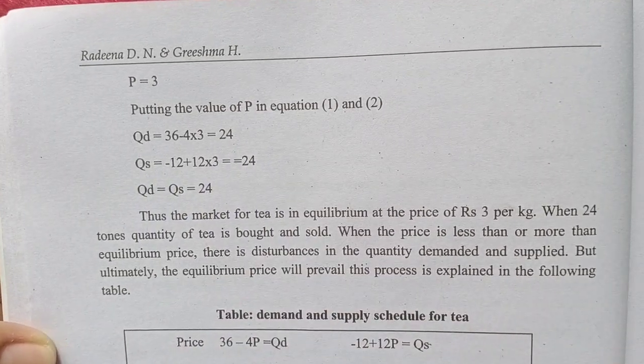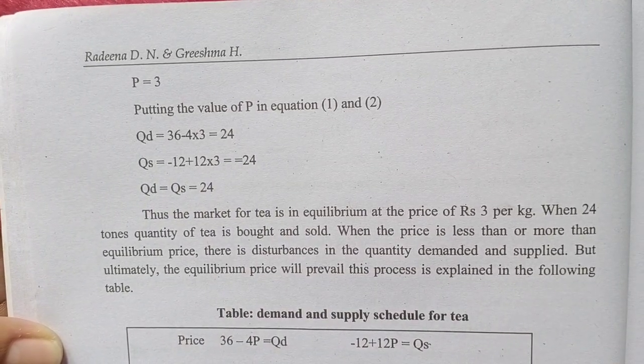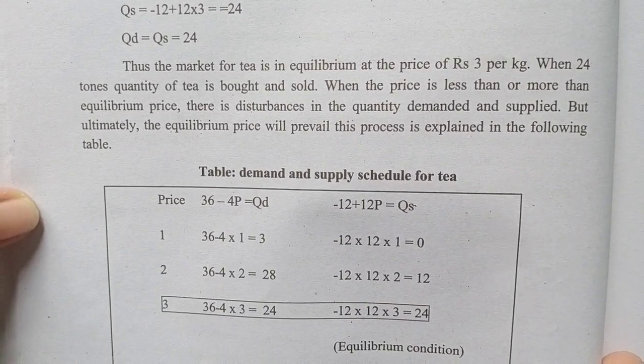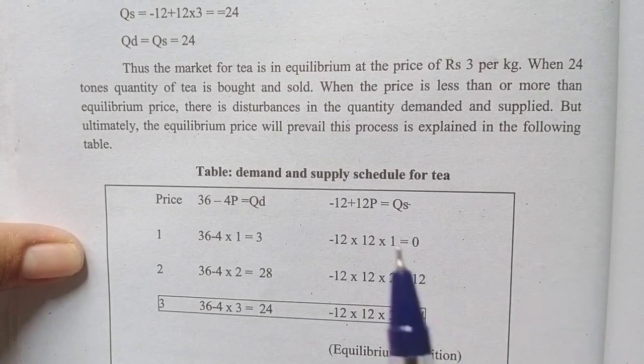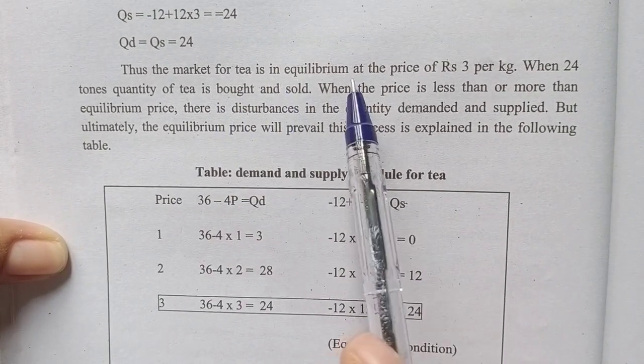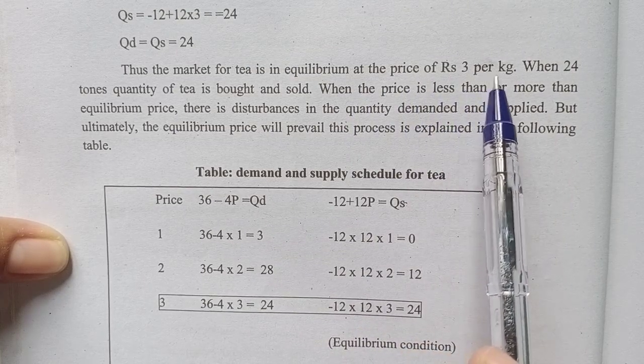QD equals QS equals 24, satisfying the equilibrium condition. We interpret this: the market for tea is in equilibrium at the price of 3 per kilogram.